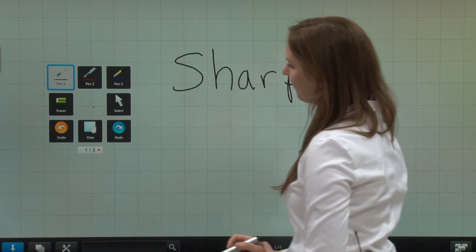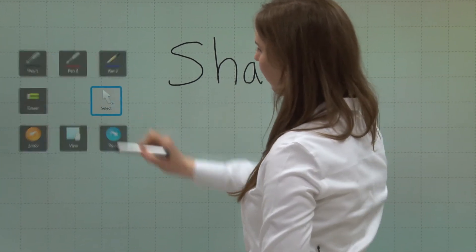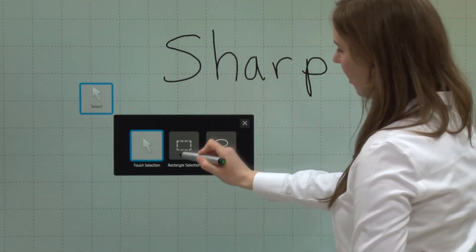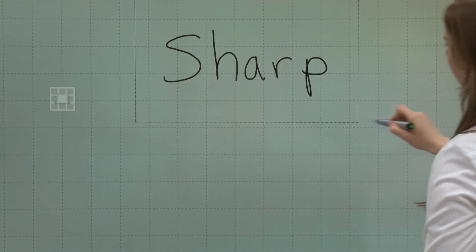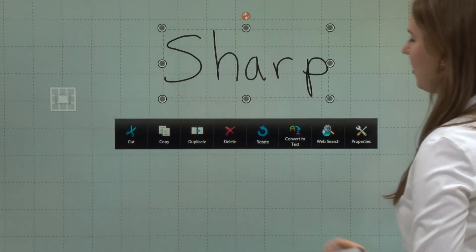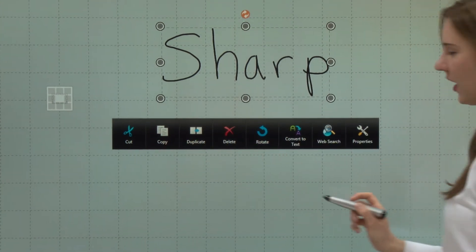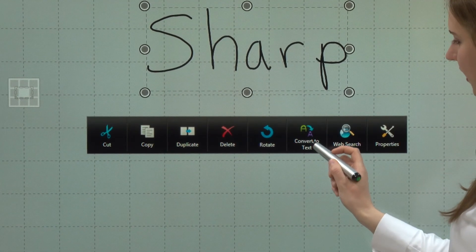To select this word, I choose my selection function and tap on rectangular selection. As you can see, the bottom toolbar here allows me to convert to text.